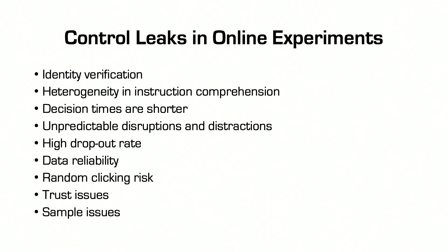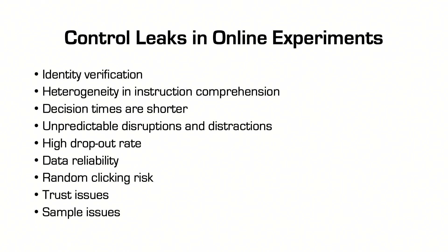There is usually no way to know who is actually participating. There are some mitigation techniques — for example, you can insist on recording subjects while they're participating, so you have some idea of how old they are. But still, there is no way to ensure that what you see is what you get. There are many issues with identity verification in online experiments. By the way, current online exam procedures in universities face exactly the same issue — identity verification is a big problem.